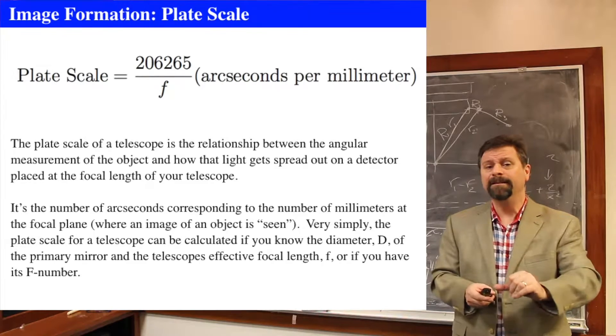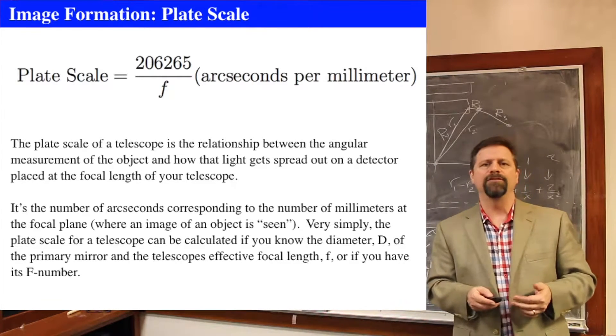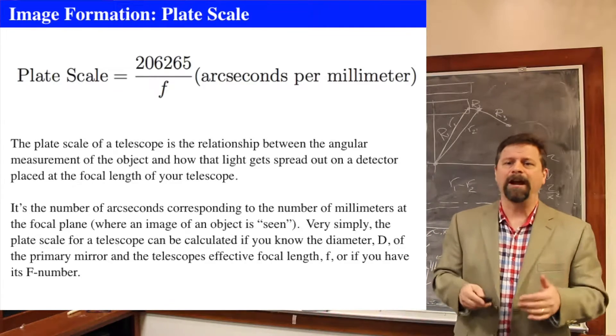The shorter the focal length, the more arc seconds you get per millimeter. That makes a big field. So if you want to really zoom in, you want to get a high magnification, then you want to have a long focal length, which gives a shorter plate scale.